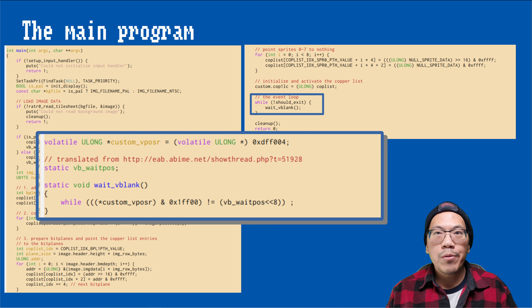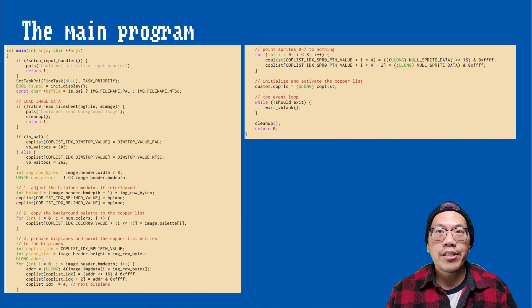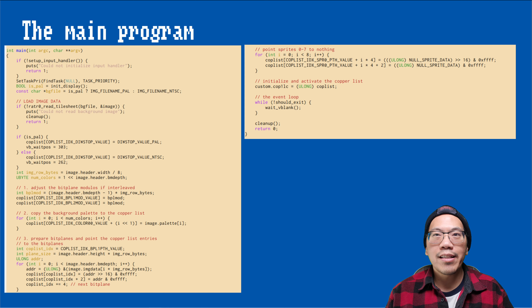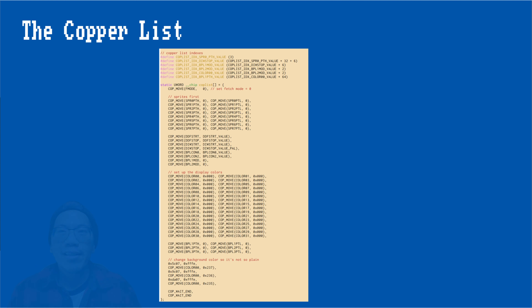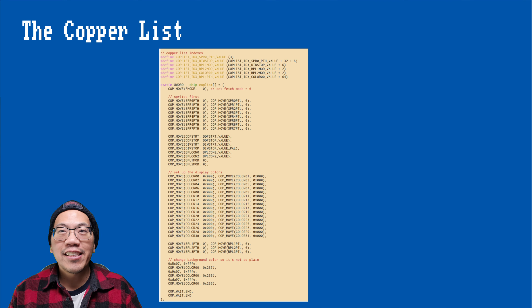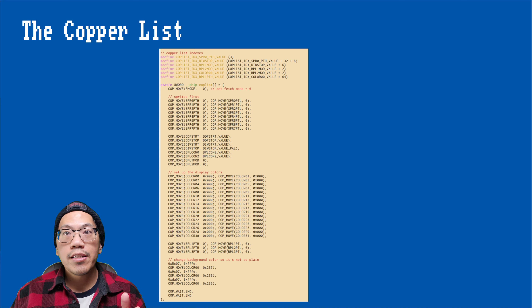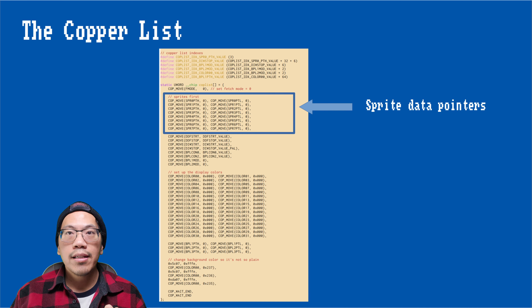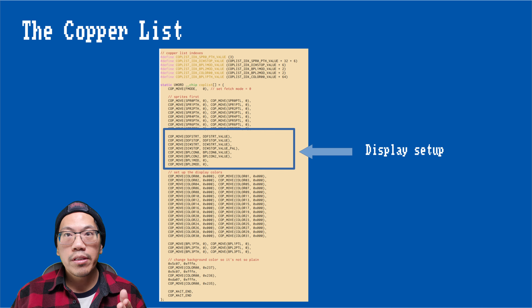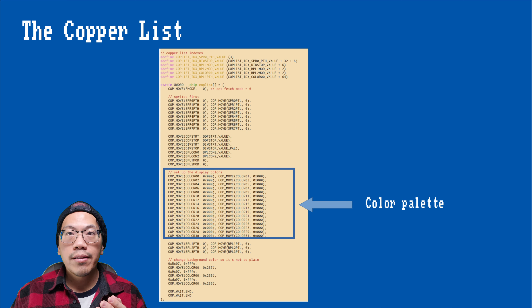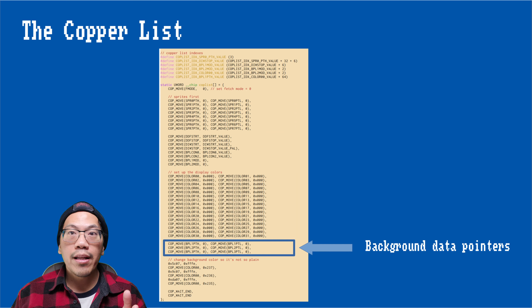This is a simple game loop. All it does is wait for the raster beam to reach the vertical blank position until the exit condition is true — in this case, when the user clicked the left mouse button. Let's take a look at the copper list, since it defines what we will see on the screen. I have built it so that it starts with a block containing the sprite data pointers, then the definition of the display window.